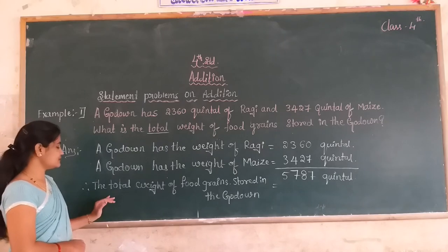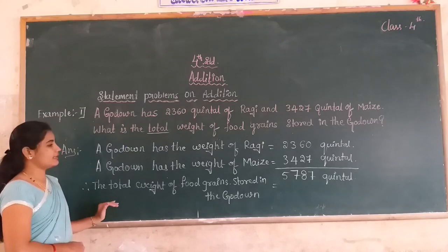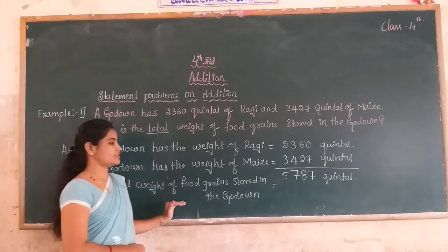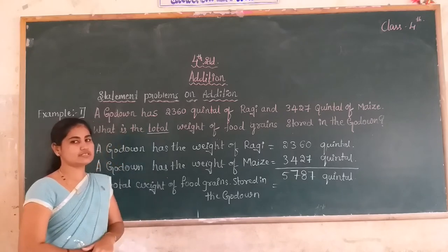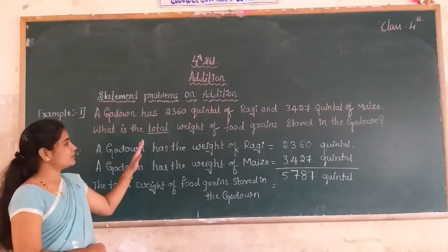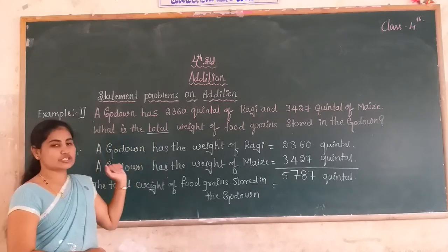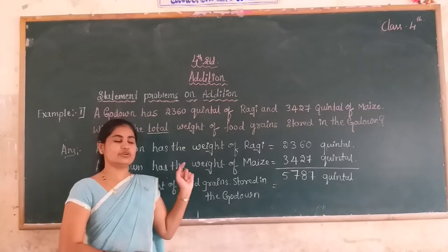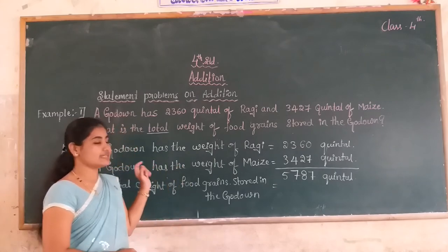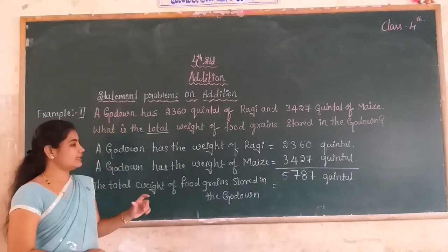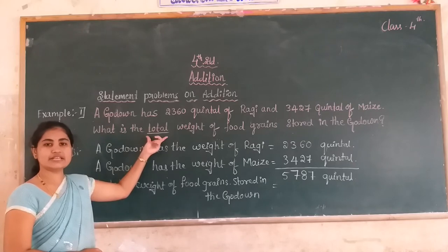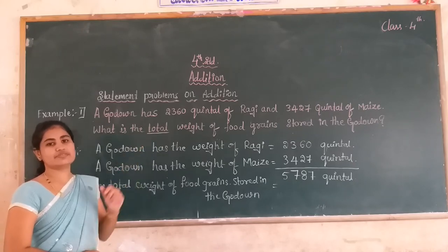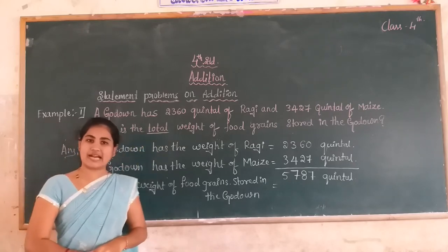Dear students, this is the method to solve the statement problems of the addition of 4-digit numbers. First, you read the question carefully and then you write what is given in that question. Then, when the word 'total' is appearing in that question, you do the function of addition.